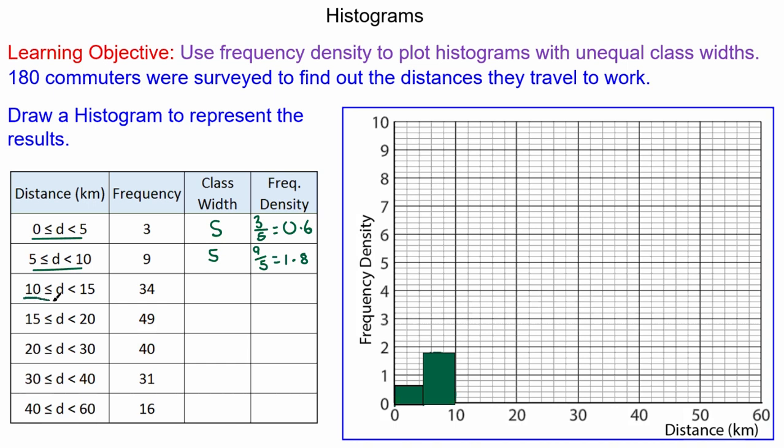Going from 10 to 15, the class width is 5. The frequency density is 34, the frequency, divided by the class width which is 6.8. We draw this on our graph, going across by 5 and up to the frequency density of 6.8.